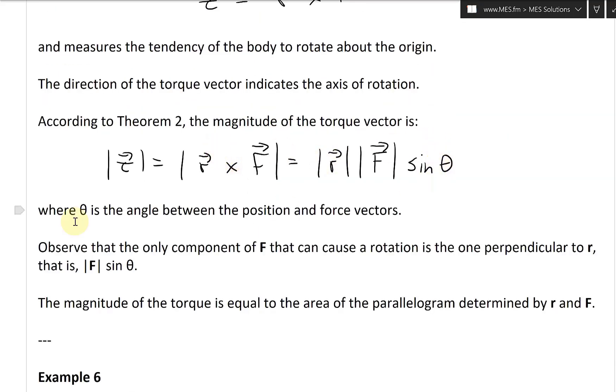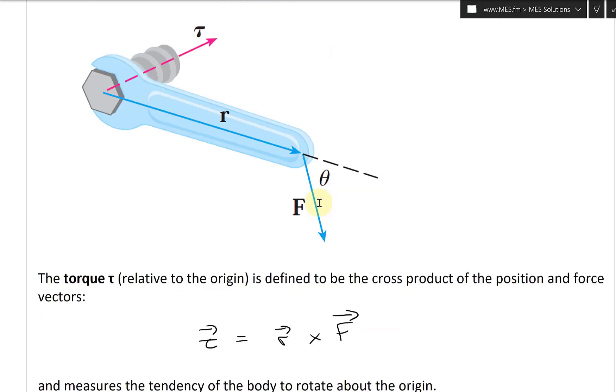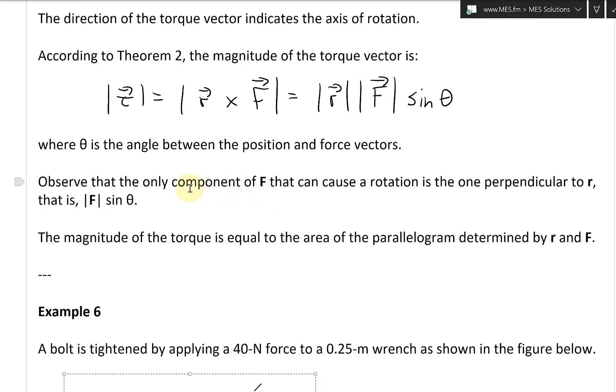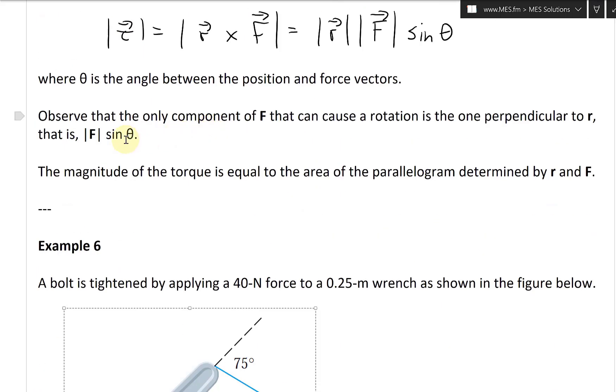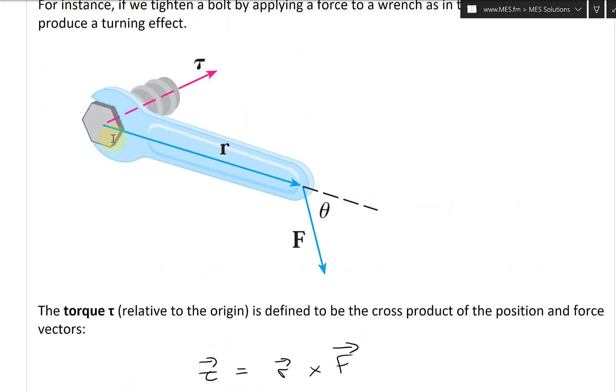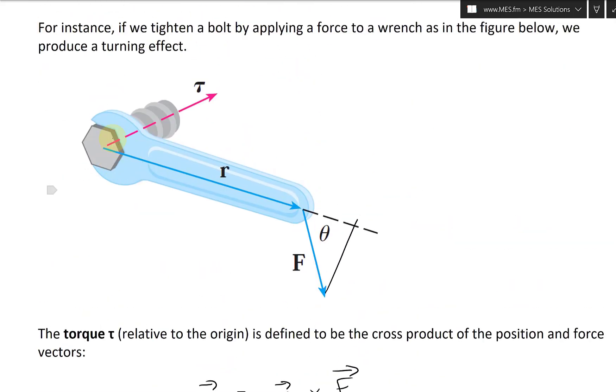Where this theta is, again the angle, theta is the angle between the position and force vectors. That's fascinating stuff. So now observe that the only component of F that can cause a rotation is the one perpendicular to r, perpendicular to this. And that is the magnitude of the force times by sine theta. So it's only this component right here, sine theta, perpendicular like that.